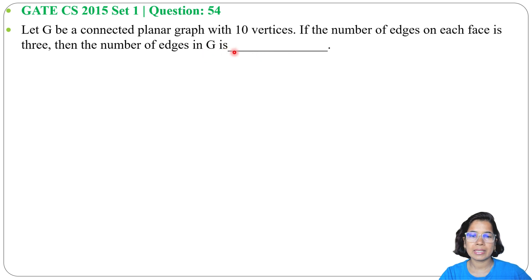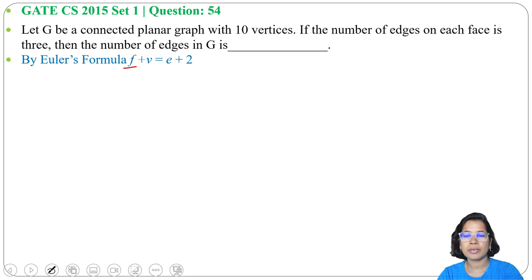According to Euler's theorem of planar graph, F plus V equals E plus 2, where F is number of faces, V is number of vertices, and E is number of edges. Here we have V equals 10. We need to find number of edges, and F is also not given.